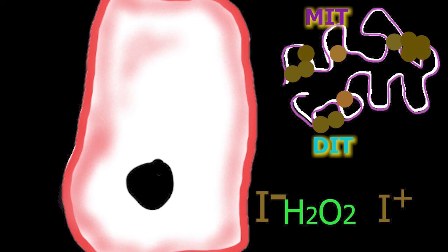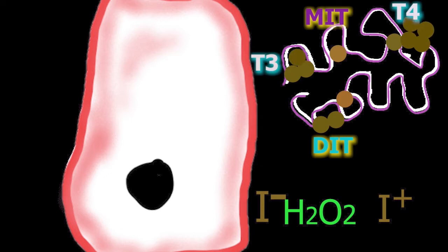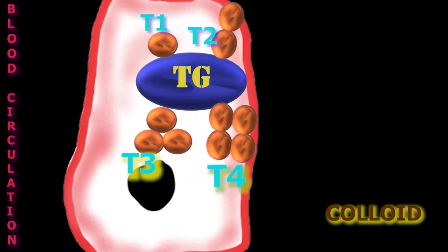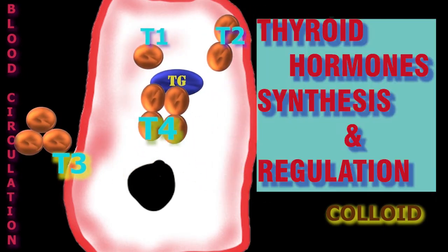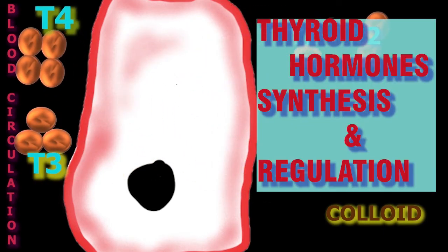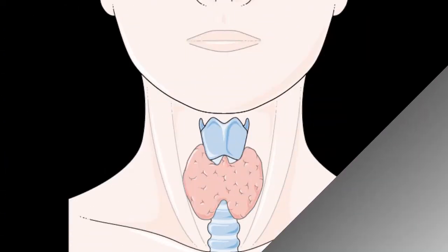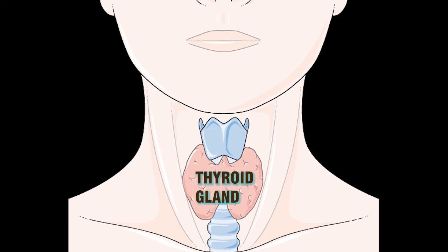Hello friends, welcome to TechQuest channel. In this video we are going to discuss thyroid hormone synthesis and regulation. Hormone synthesis is a very important part to understand the regulation and the blood tests done to identify disease conditions. The butterfly-shaped thyroid gland is located just inferior to the larynx.